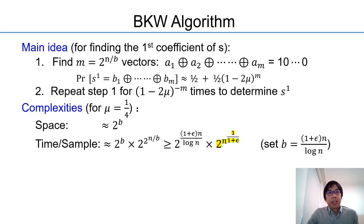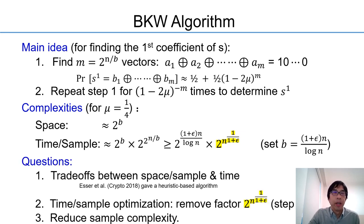We summarize the complexities of the BKW algorithm. To minimize time and sample by choosing the block size b properly, we end up with exponential complexities which are roughly 2^(n/log n). And it remains open if we can do trade-offs between space and time. This is especially meaningful when doing security evaluations of LPN-based crypto systems. If the time complexity and the space consumption are both 2^80, it's not a practical estimate at all because in practice we don't have a memory of size 2^80. So indeed, we didn't know if we can improve the exponential factor which is highlighted corresponding to the number of iterations. Further, we would like a more efficient approach to reduce sample complexity.